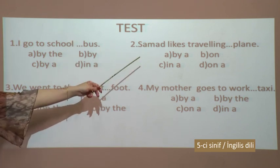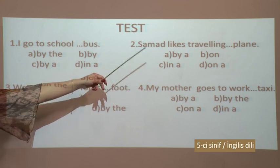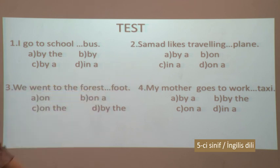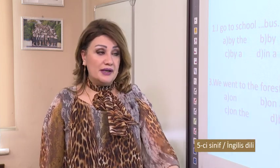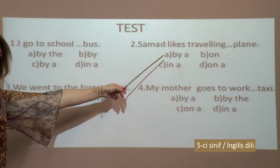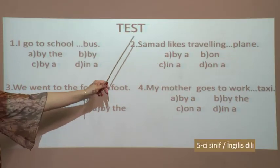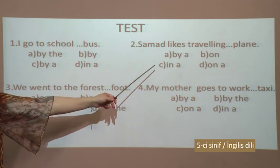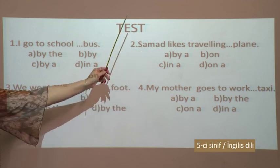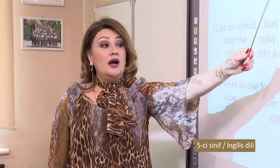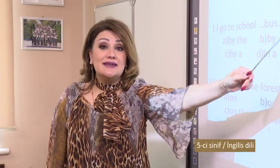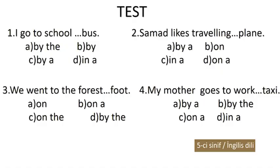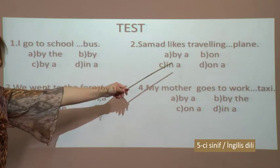Samad likes traveling - A: by a plane, B: in a plane, C: on plane, D: on a plane. Of course, variant D is correct. Because after 'by' we don't use any article. The preposition 'in' should be used only with taxi or a car. B is incorrect because after 'on' we don't see any article there, but we should use 'on' and 'in' with articles. Therefore the correct variant is D.